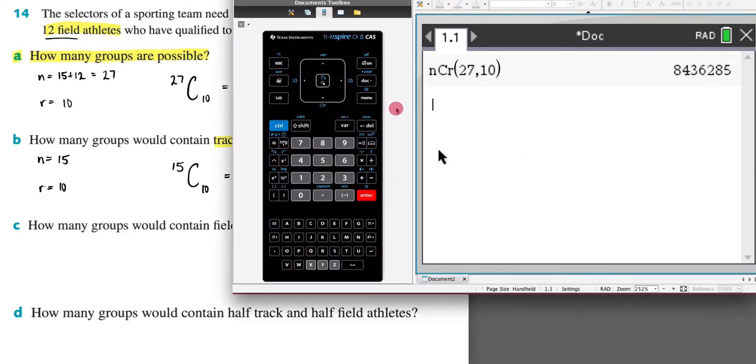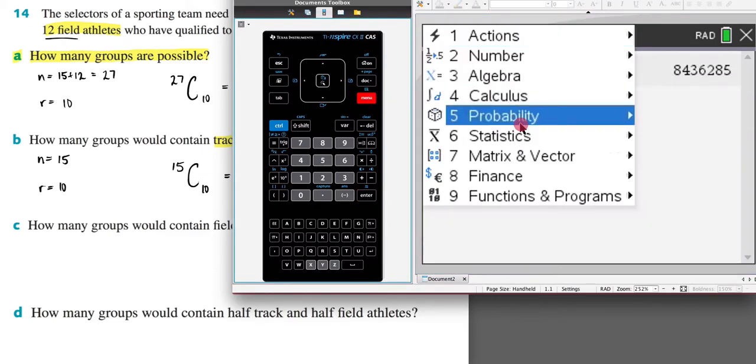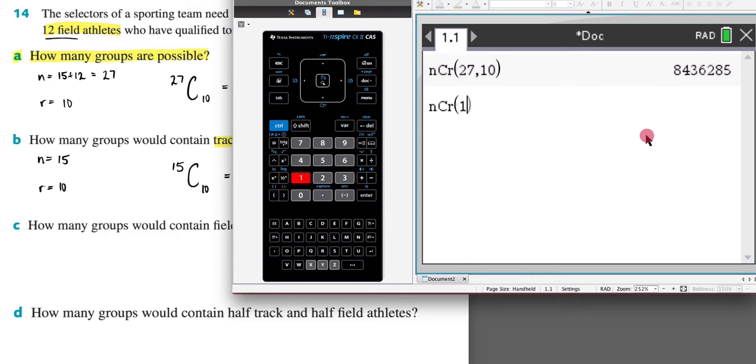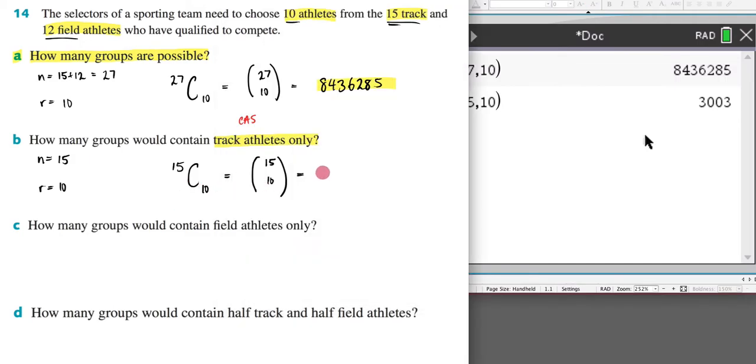Now I'm going to come over here and put that into my CAS. So again probability, combinations, my n first then my r, 15 and 10. My answer is going to be 3003.